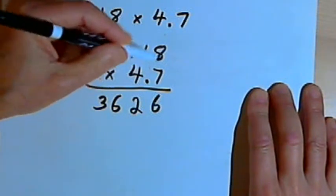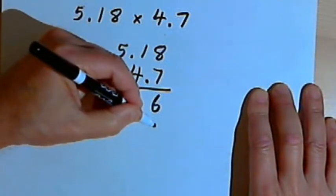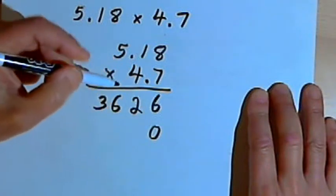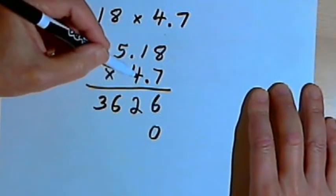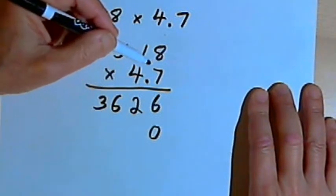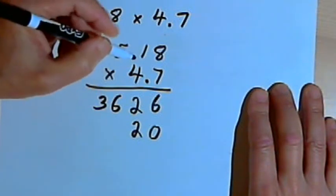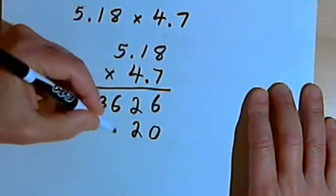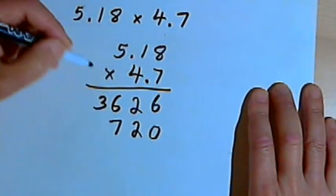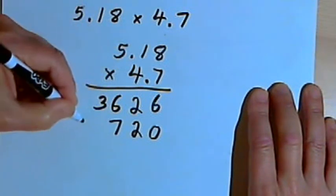Then I'm going to multiply by 4. So I'll add a 0 as a placeholder. And then multiplying by 4, I've got 4 times 8 is 32. I'll write the 32 and carry a 3. 4 times 1 is 4, plus 3 more is 7. And 4 times 5 is 20.